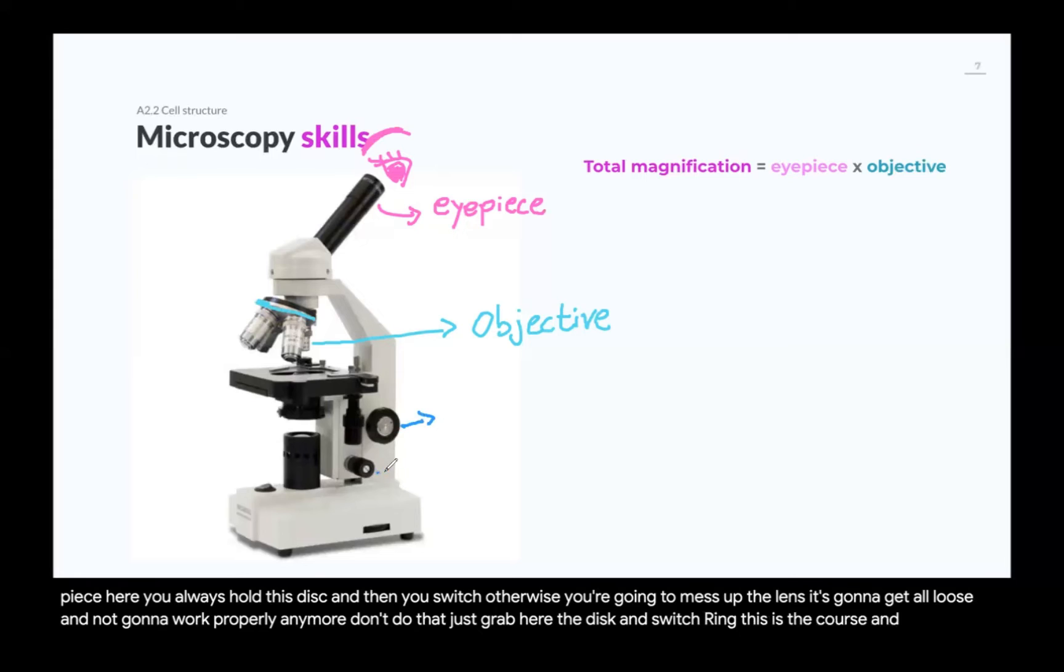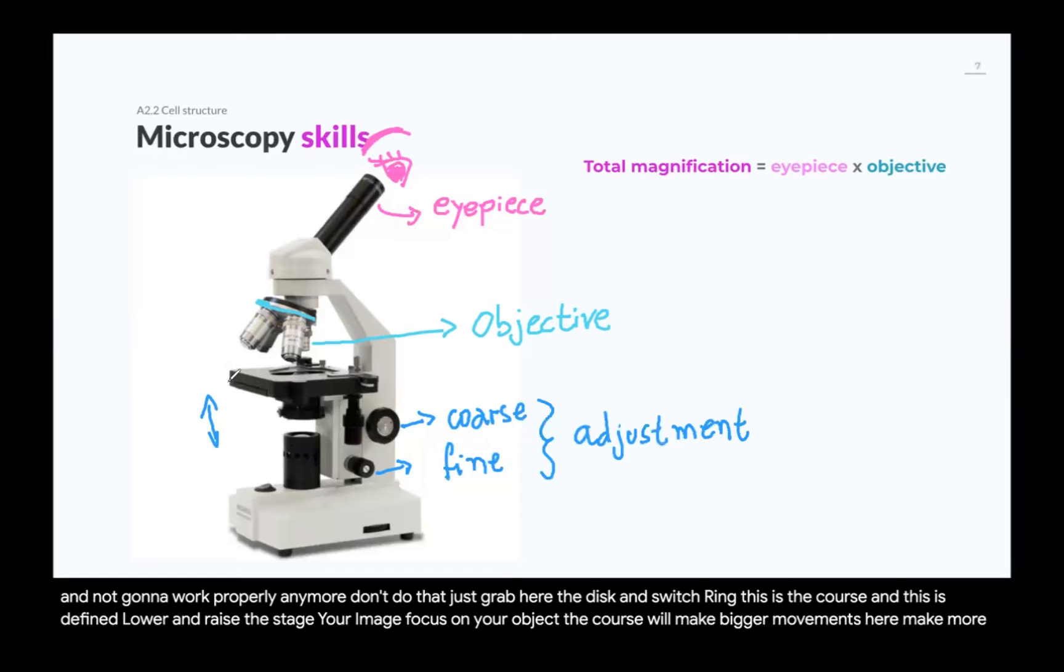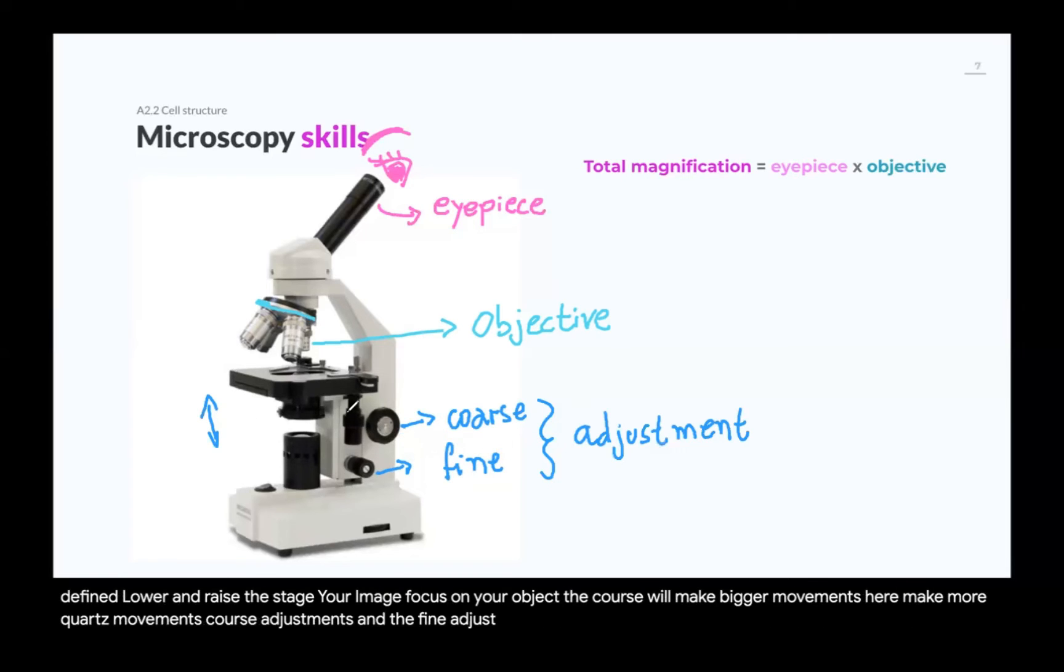In case you are wondering, this is the course and this is the fine adjustment knobs. They will lower and raise the stage so that you can focus your image, focus on your object. The course will make bigger movements here, make more coarse movements, coarse adjustments. And the fine adjustment knob will move ever so slightly so you can do the final touches, make the image real crisp.